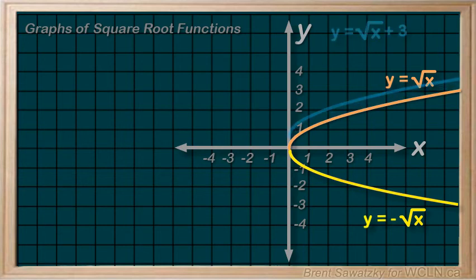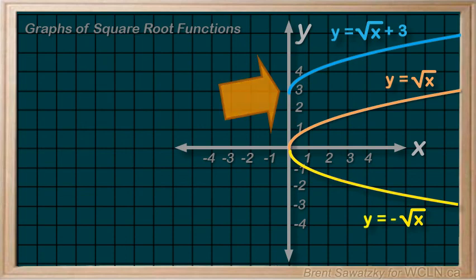Also, like the polynomials, we can shift the graph up and down by adding or subtracting a number at the end. So our starting point also shifts up and down.